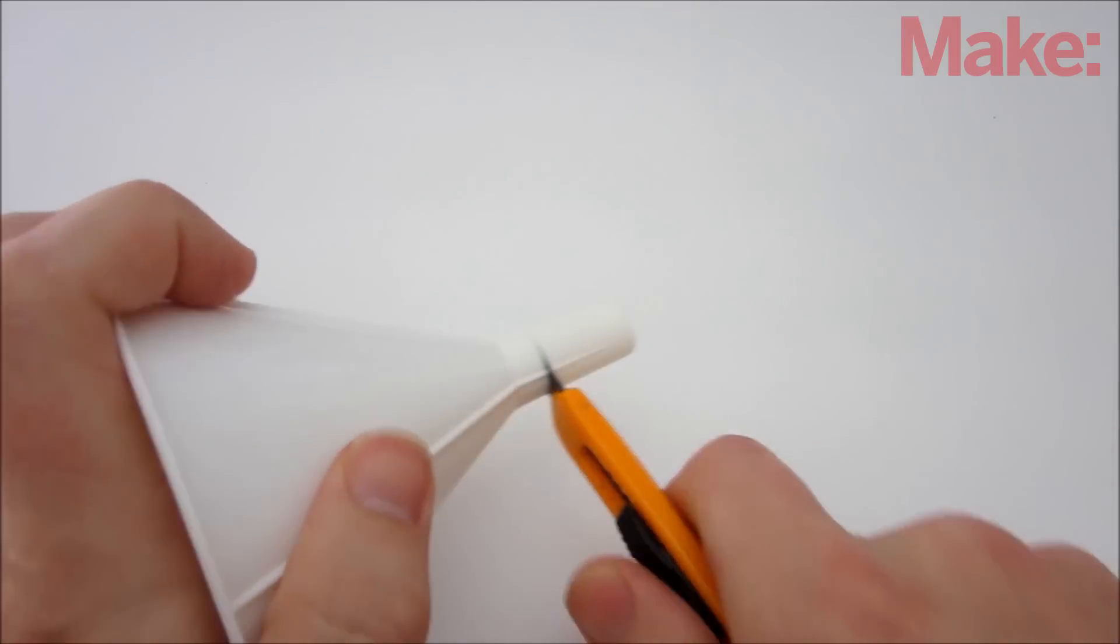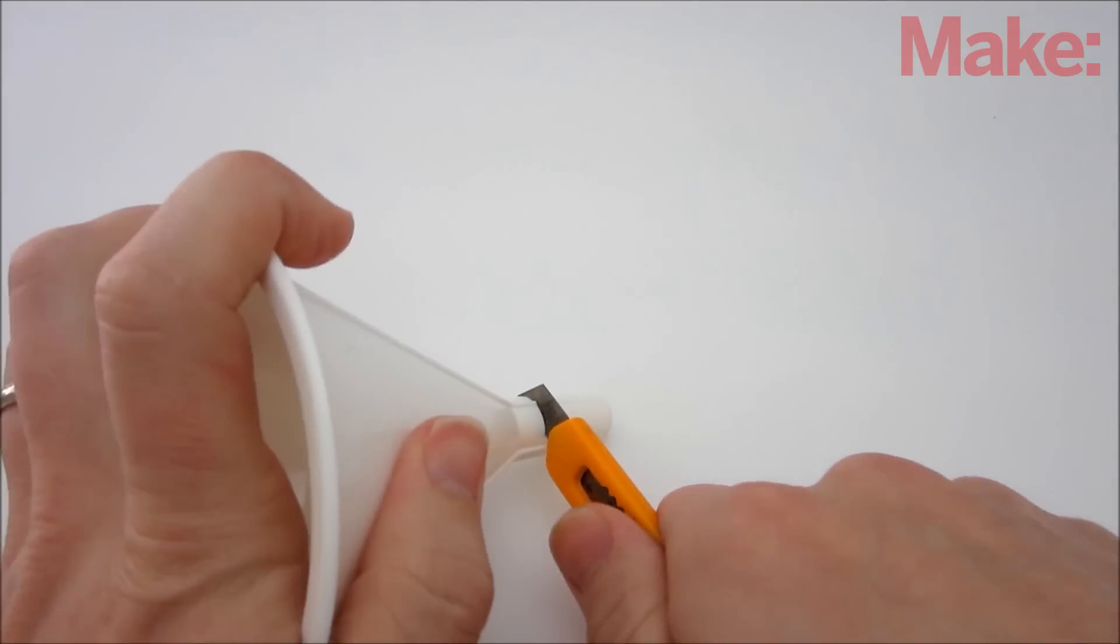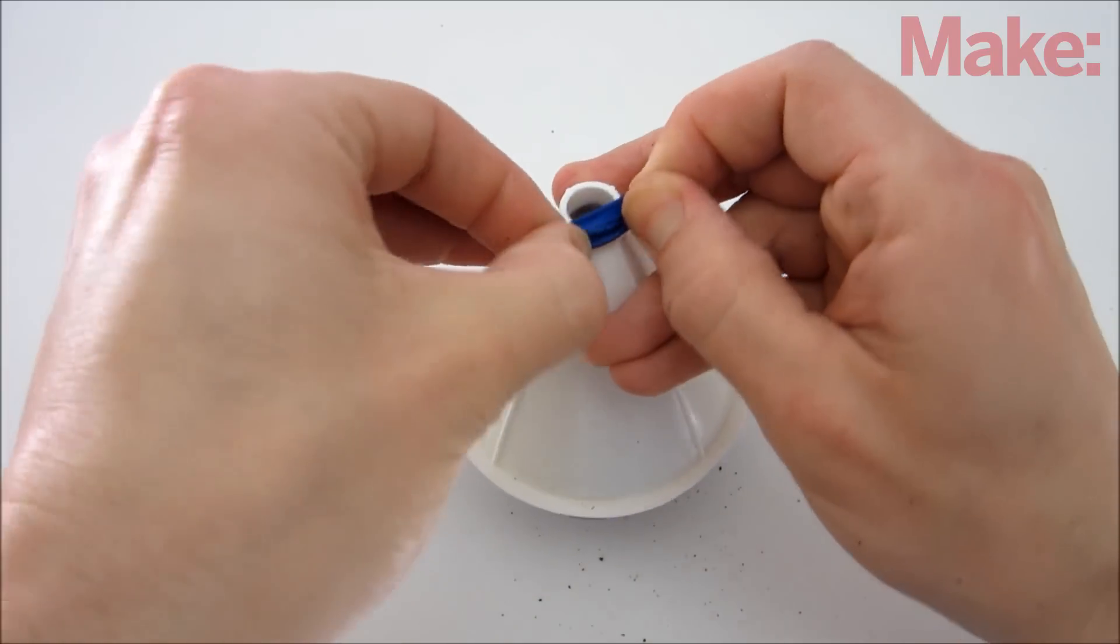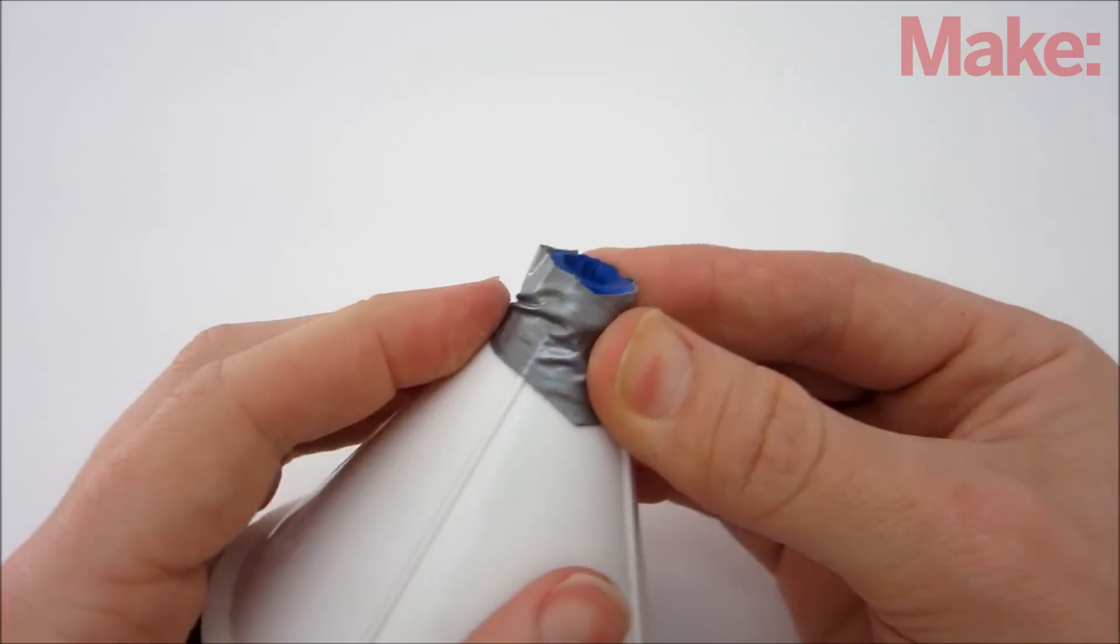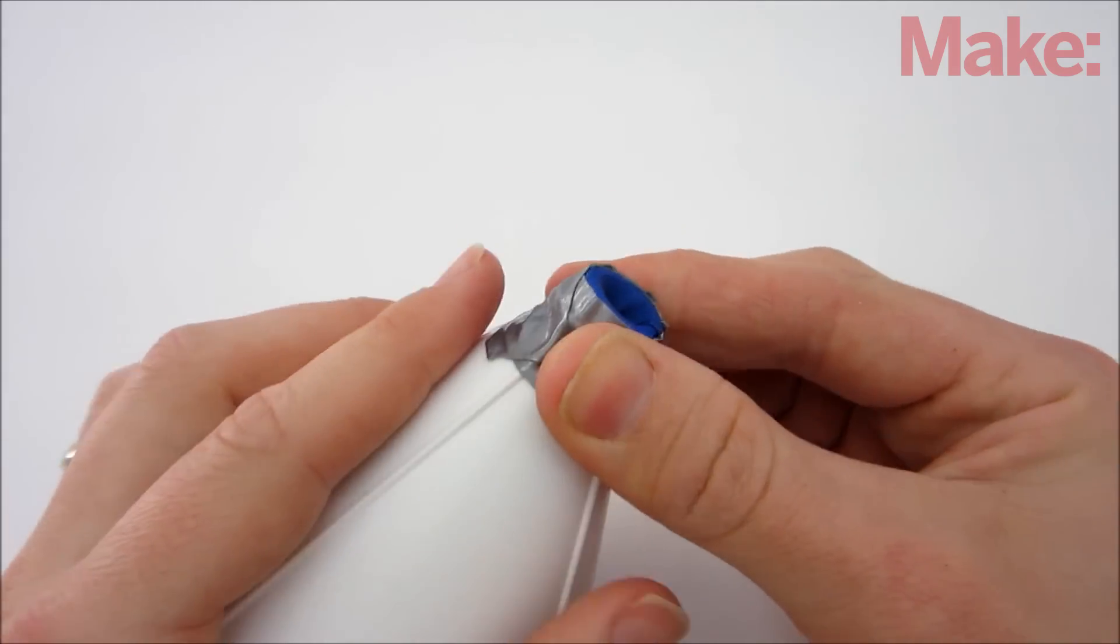Then take the funnel and cut the end so that it only sticks out about a half an inch. Now insert the neck of the balloon through the funnel and attach it to the other side. Secure it in place with thin strips of duct tape.